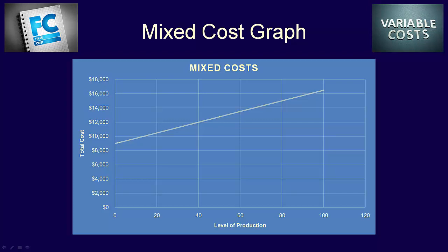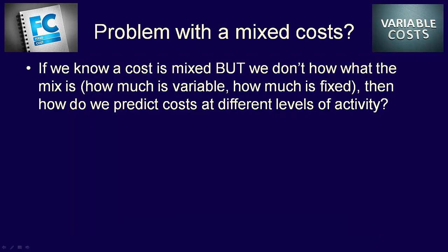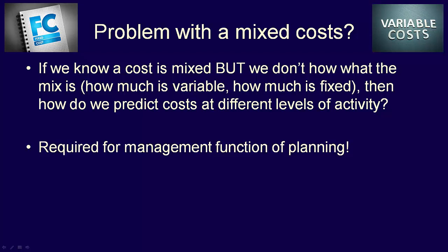So what's the problem with mixed costs? If we know a cost is mixed but we don't know what the mix is — how much is variable, how much is fixed — then how do we predict costs at different levels of activity? We can't. This is a problem because one of the main functions of management is planning, and planning requires knowing how costs change with activity levels. If mixed costs are given to us as a total, because they're a mix of variable and fixed, they can't be predicted. We need to find a way to separate out the variable and fixed components — but we'll address that in another video.